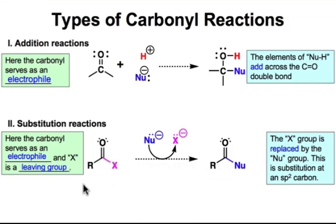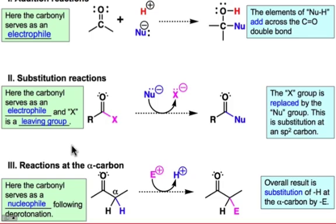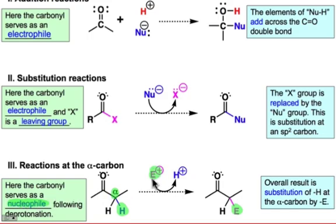The third kind of reactivity is another type of substitution, but it's a substitution in which the hydrogen at the α carbon is substituted by an electrophile. It's going to involve a deprotonation of that α carbon, and once that deprotonation takes place, that α carbon will become nucleophilic, and so it will react with an electrophile to make a new carbon-to-electrophile bond at the α carbon.